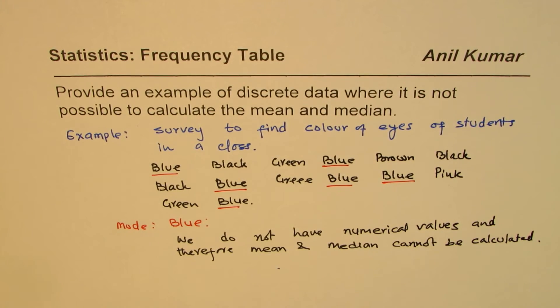So that is very important to understand. So there are cases where we do have discrete data, but we are unable to calculate mean and median since we are lacking numerical values. I hope that is important to understand.